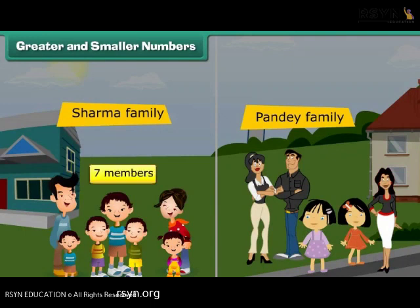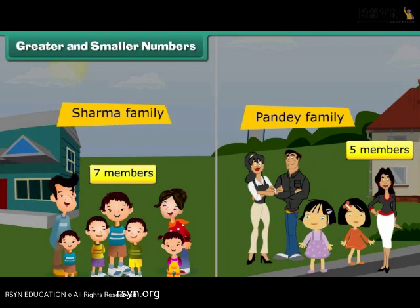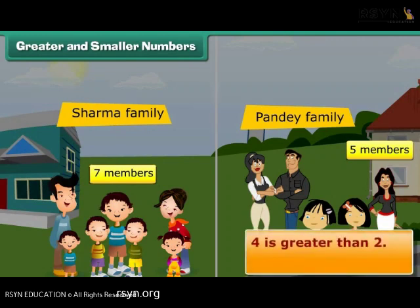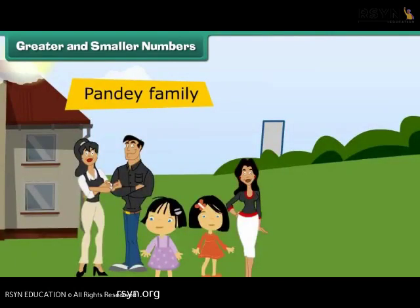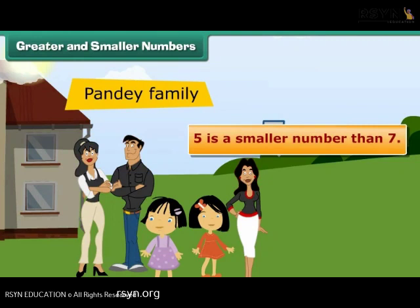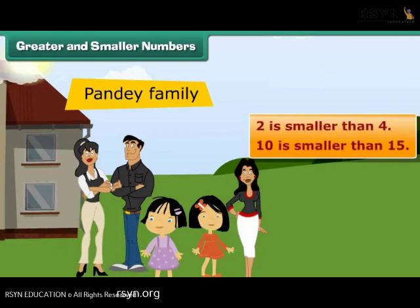Greater and smaller numbers. Recall the Sharma family with 7 and Pandey family with 5 members. Sharma family has more members, which means 7 is a greater number than 5. Numbers that come later are greater than the numbers that come before. For example, 4 is greater than 2, and 15 is greater than 10. Similarly, numbers that come before are smaller than the numbers that come later. 2 is smaller than 4, and 10 is smaller than 15.